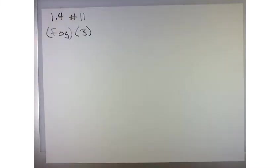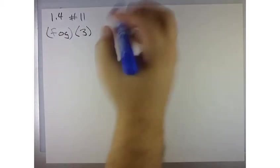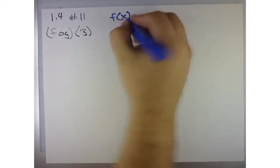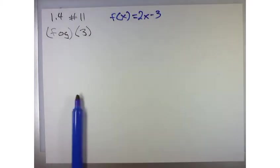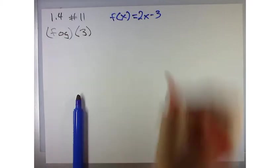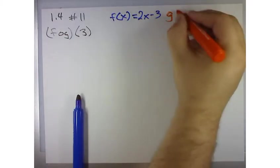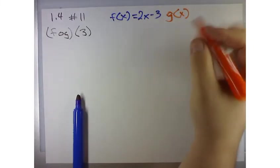They gave us two functions, f of x and g of x. f of x equals 2x minus 3, and g of x equals x plus 1.